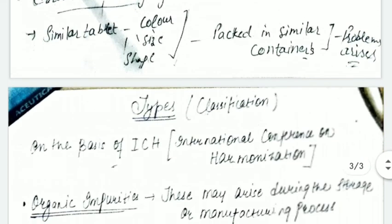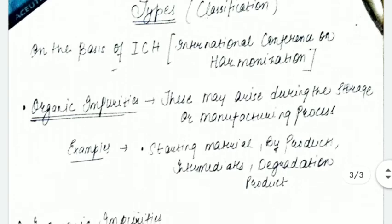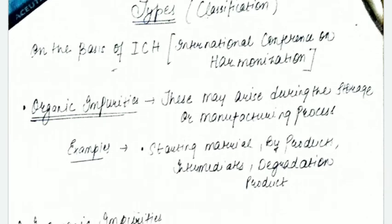Now we're going to talk about types or classification of impurities. Impurities are not only one type. The ICH - International Conference on Harmonization - has divided them into three parts: organic, inorganic, and residual solvents.